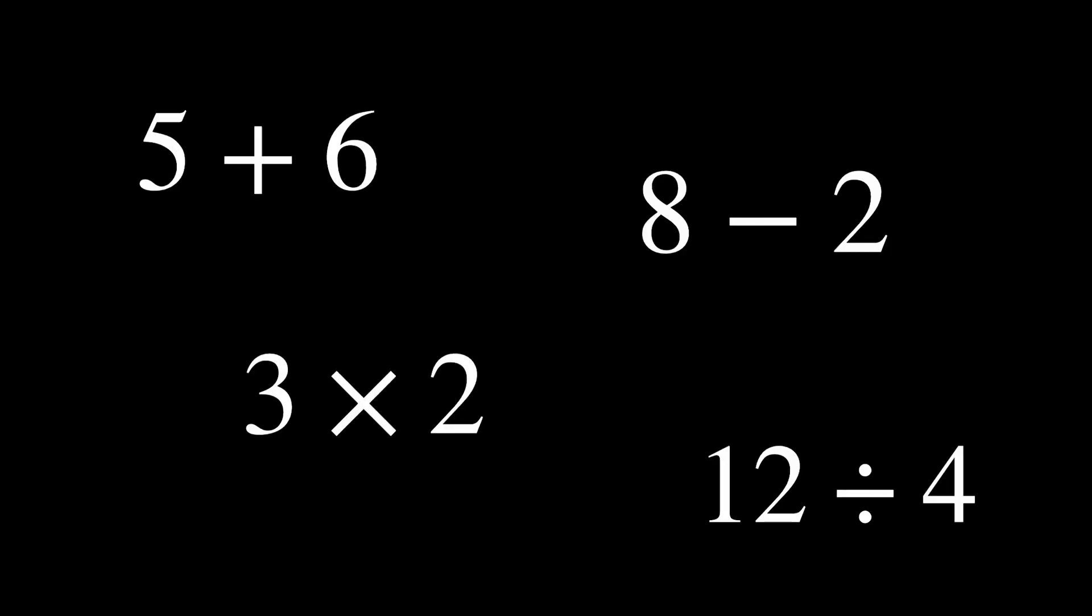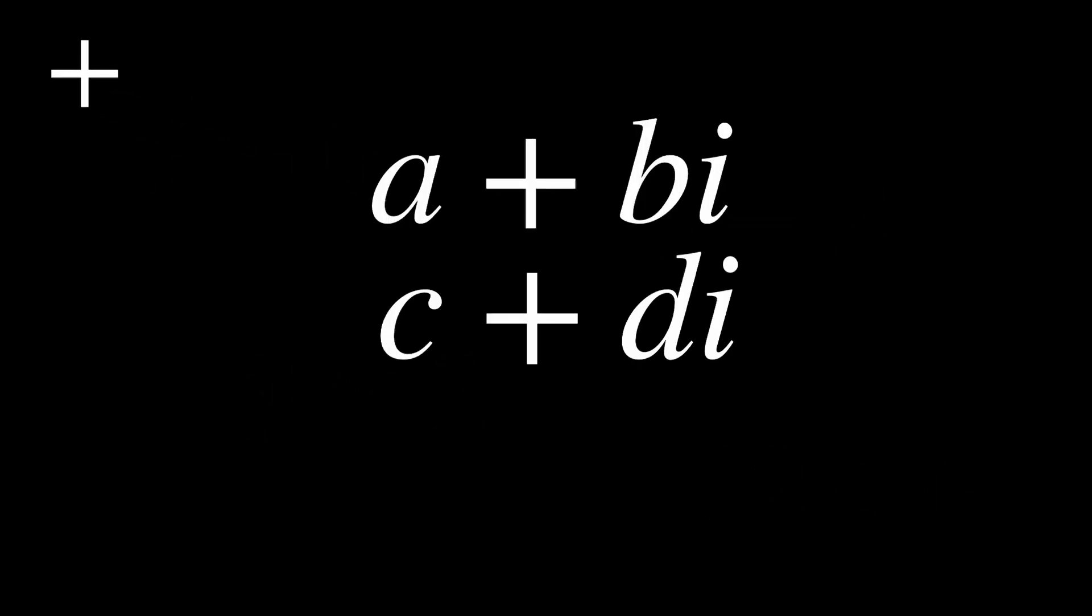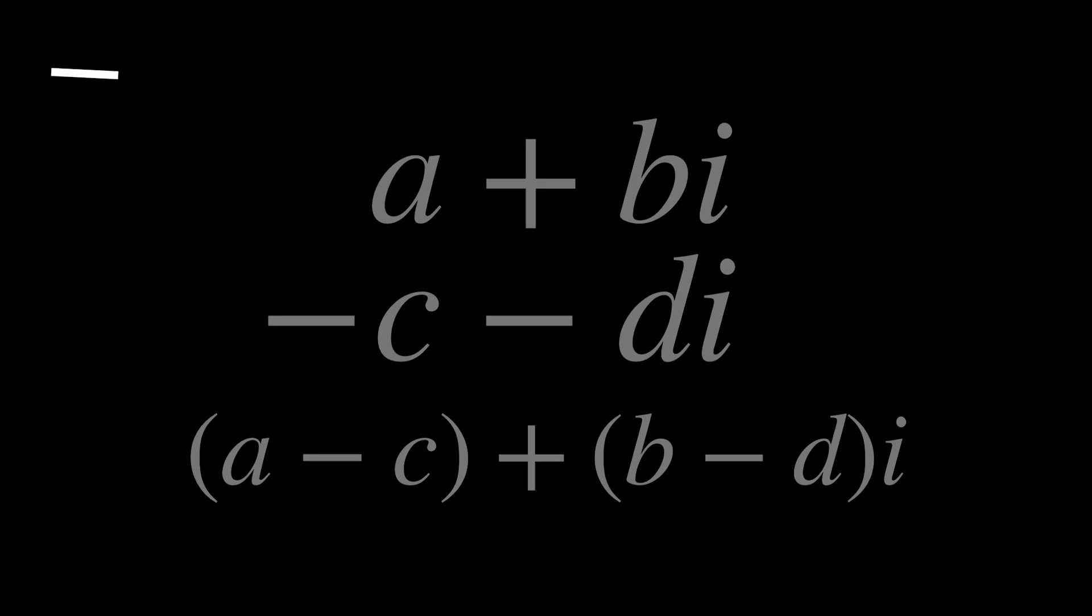We know when we have real numbers, we have some operations we can do with them, like addition, subtraction, multiplication, and division. Since complex numbers are also numbers, how would we do these operations on them? Let's start off with addition. When they are in Cartesian form, you can just add the real parts and add the imaginary parts. To subtract, you would do the same thing, but first need to multiply the number by negative 1. Make sure to distribute the negative 1 before you add the numbers.